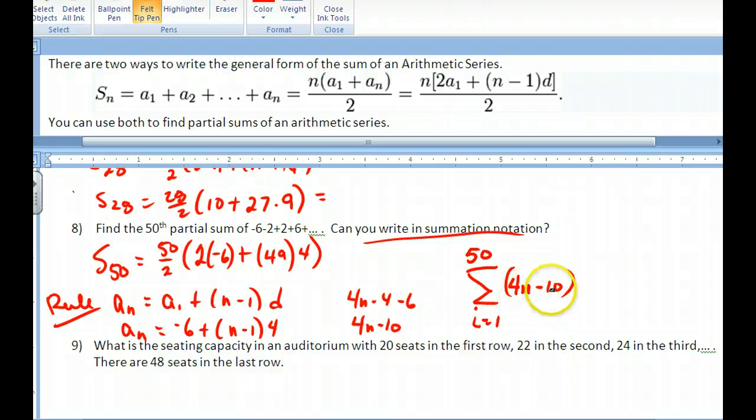Now double check. Plug in 1. Yep, I got negative 6. Plug in 2. I'm going to get negative 2. So that's working out. And then I go from 1. If you start at 1 to 50, there's 50 terms. So this is the summation notation that reflects this series right here. Those are the same thing.